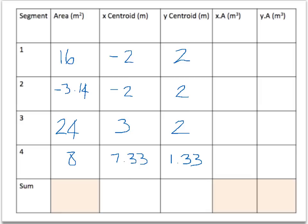Now these last two columns are just multiplying the X centroid by the area, and the Y centroid by the area. So for segment 1 we're going to get negative 32 for our X times area, and for our Y times area we're going to get 32m cubed. Segment 2 will be negative 2 times negative 3.14 for the XA, so we're going to get 6.28. And for our YA we're going to get the same but negative, so negative 6.28.